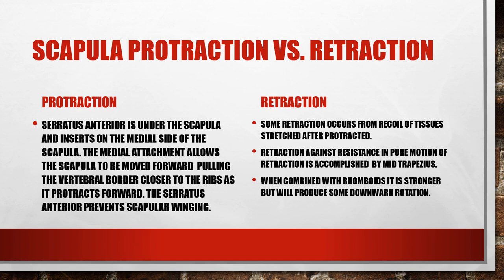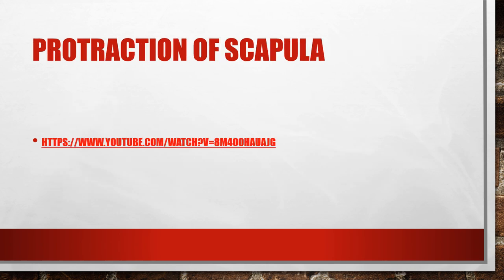Retraction, otherwise known as adduction of the scapula, involves some recoil of tissues after protraction, but retraction against resistance requires muscles. Pure retraction uses the mid-trapezius. You can retract with the rhomboids as well for a stronger retraction, but combining with the rhomboids will also produce some downward rotation.